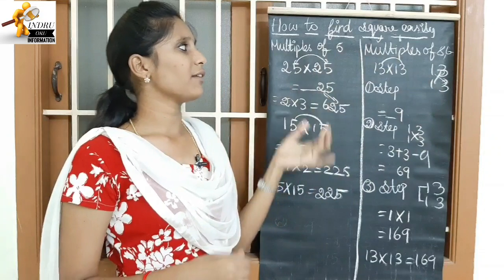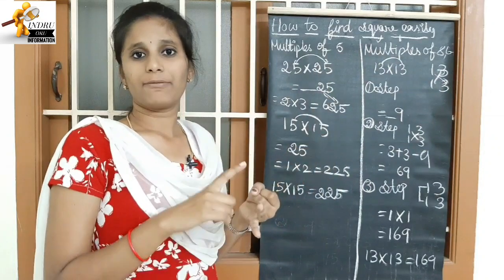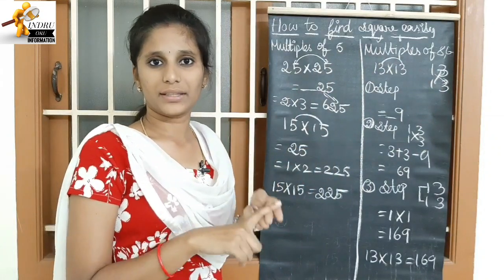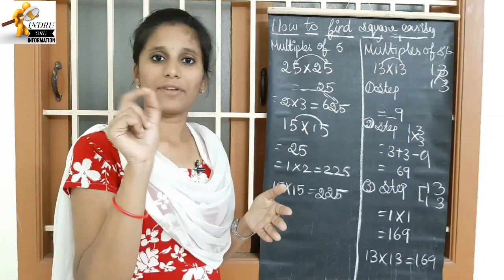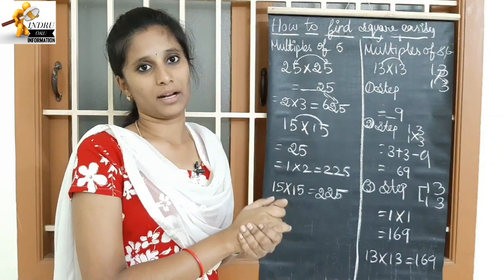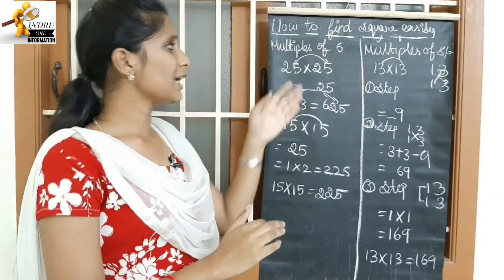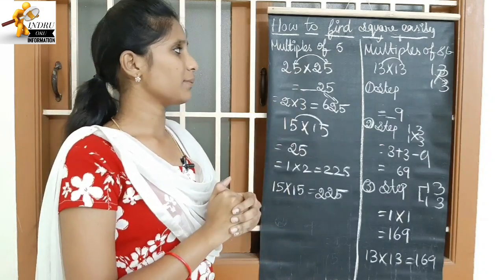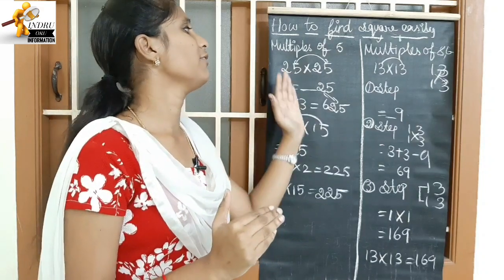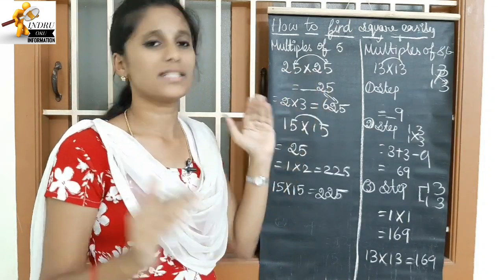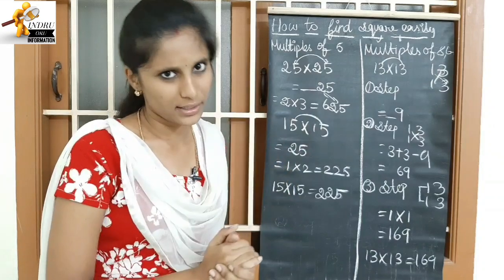Multiples of 5 means: 5, 15, 25, 35, 45. How do we calculate that? For example, 25 into 25 — 625 is the answer. We can solve these questions.